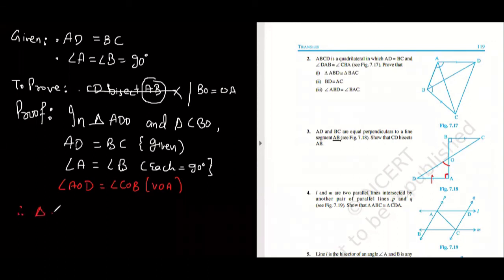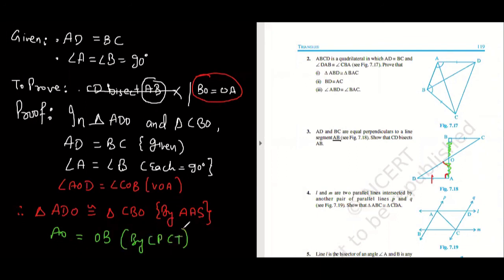Tell me—ADO is congruent to triangle CBO. Which property? Angle-angle-side. Very good, angle-angle-side. These two triangles are congruent. Now just check—is this information, these two sides, available in these two triangles? BO is available here and OA is available here. Can you see that? So I can write AO equals OB by CPCT. I hope you understood how to present your work.